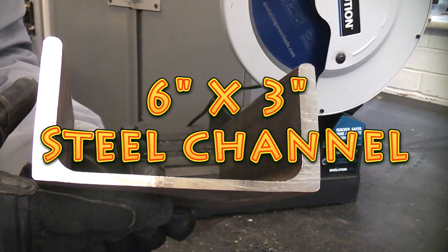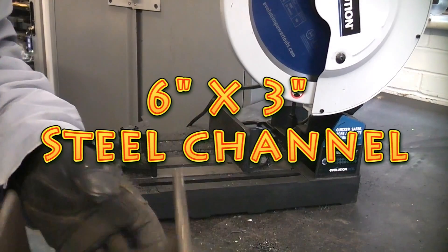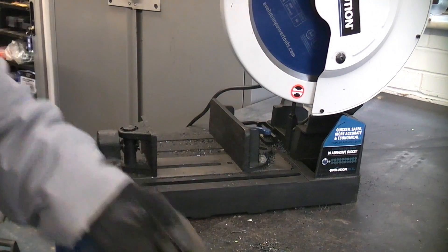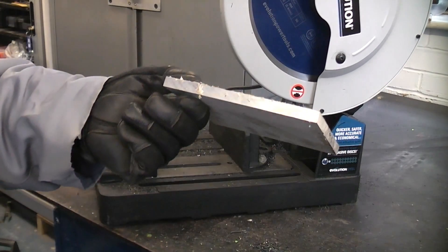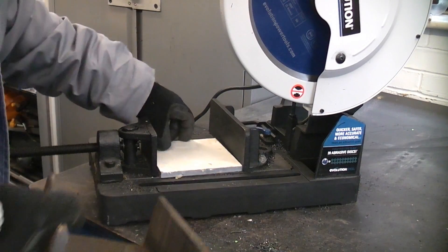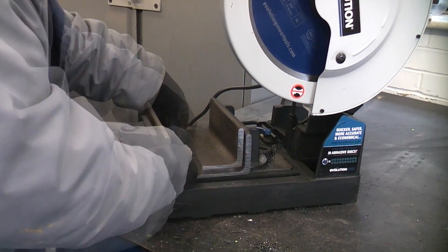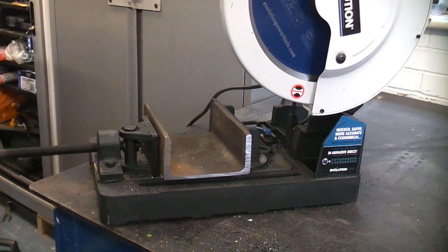This is a piece of 6 inch by 3 inch mild steel channel. To cut through this we do need to lift this up slightly because of the radius of the blade. So I'm just going to put a 10mm packer in there. I'm going to put the channel on top of that and we should be able to quite easily cut through that.